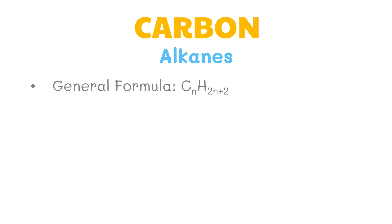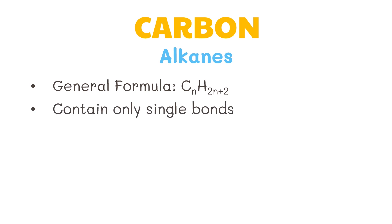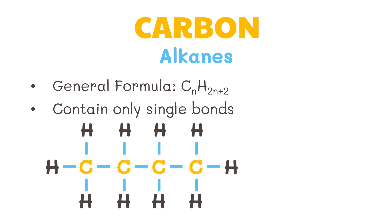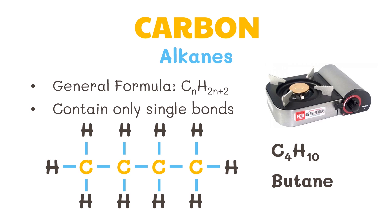Alkanes, whose general formula is CNH2N+2, also known as paraffins meaning low affinity, are hydrocarbons that contain only single bonds. They are classified as saturated hydrocarbons with all carbon atoms linked by single bonds. Therefore, for an alkane with four carbon atoms, the formula would be C4H10. This is called butyne. Butyne is used in various applications including LPG in commercial and residential, chemical, refinery, industrial, petrochemical, and autofuel sectors.